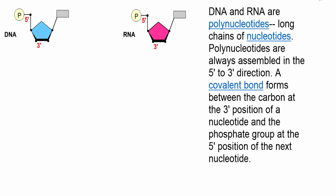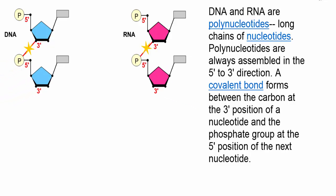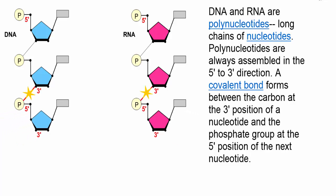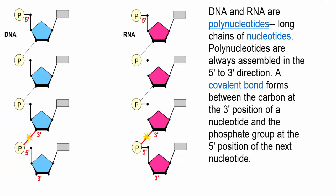DNA and RNA are polynucleotides — long chains of nucleotides. Polynucleotides are always assembled in the five-prime to three-prime direction. A covalent bond forms between the carbon at the three-prime position of a nucleotide and the phosphate group at the five-prime position of the next nucleotide.